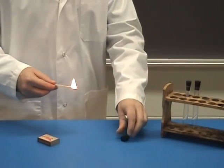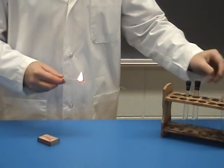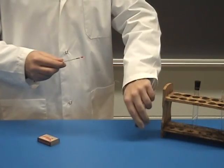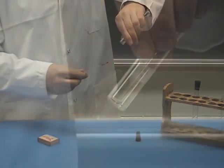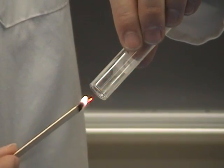Test 2. Light the wooden splint. Extinguish it but keep the tip glowing. Insert the glowing tip into the test tube containing the unknown gas. If the splint glows brighter or ignites, the gas is probably oxygen.